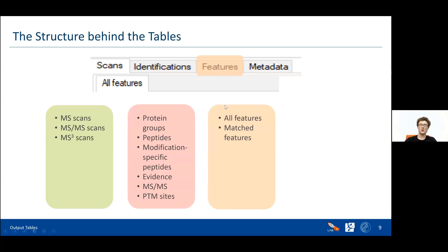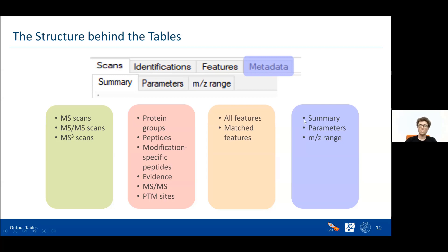In the features class, you can see all features — including those which are not identified. In the evidence table you see all features that were identified and contributed to finding something; here in features you see everything in the dataset including all features identified in the raw data. More specifically, the match features table might be interesting to see how many of your features you actually identified as something. Then finally there are three tables giving you metadata — information about what machines you were running, what parameters you used, and so on. This is useful when you want to reproduce a study.